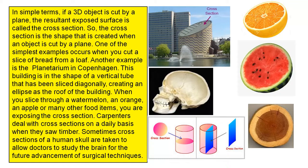So, the cross-section is the shape that is created when an object is cut by a plane. One of the simplest examples occurs when you cut a slice of bread from a loaf.